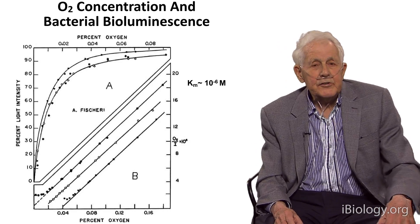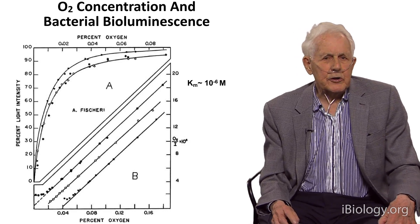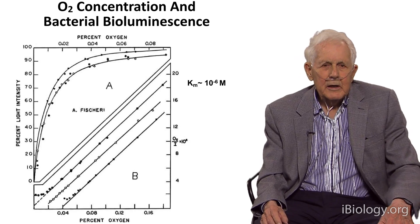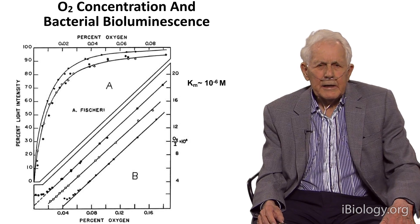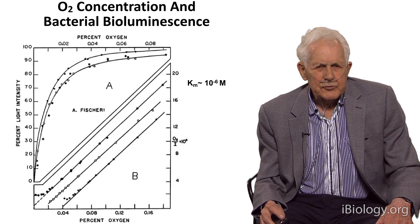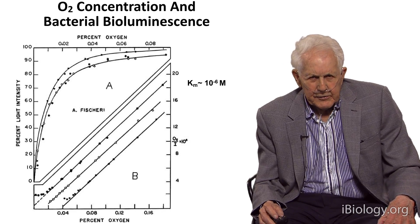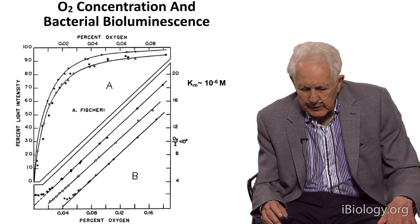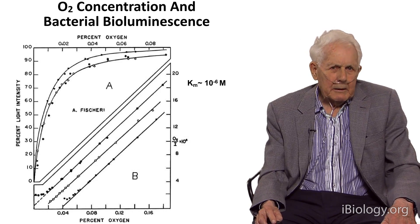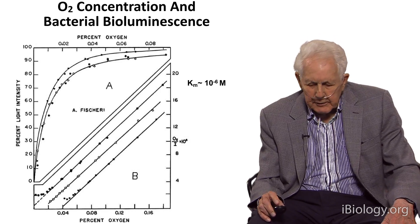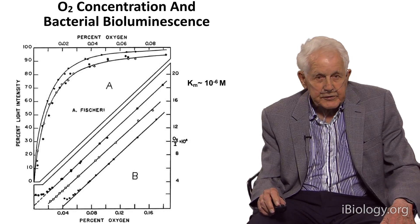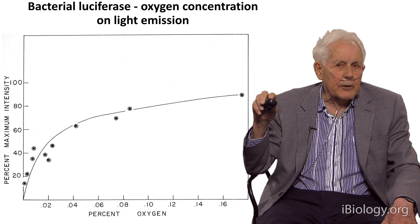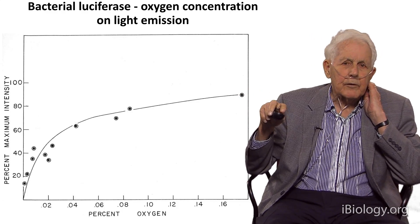Before the 1960s, when I did my doctoral thesis research, I studied the effect of oxygen concentration on bacterial bioluminescence. You see here that it is extremely low. The KM is on the order of 10 to the minus 6 molar — something very low compared to today's oxygen concentration. We did this experiment with the luciferase isolated from the cells, so it's not a cellular phenomenon; it's actually the luciferase that has the affinity for very low oxygen.